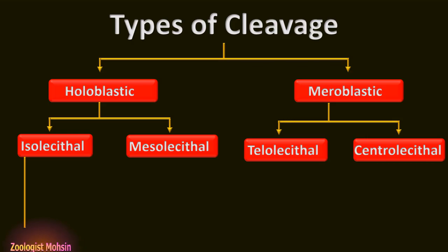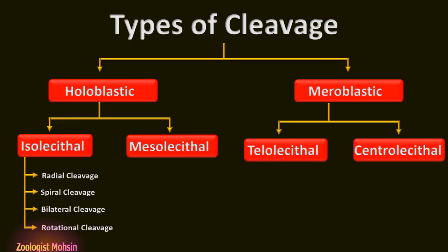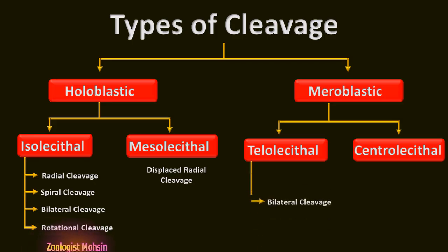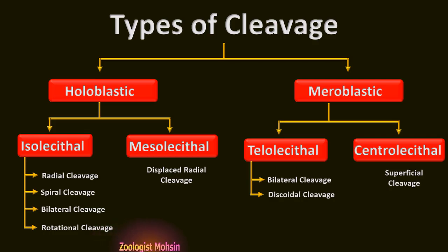In isolecithal eggs, four kinds of cleavage are observed: radial cleavage, spiral cleavage, bilateral cleavage, and rotational cleavage. Mesolecithal eggs have displaced radial cleavage only. Telolecithal eggs have two kinds: bilateral as well as discoidal cleavage. Centrolecithal eggs undergo only superficial cleavage.